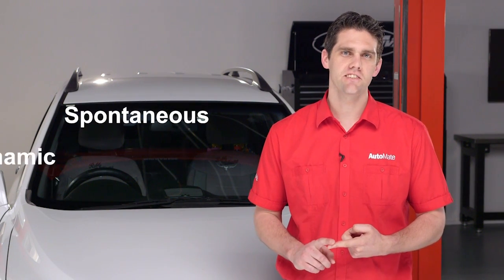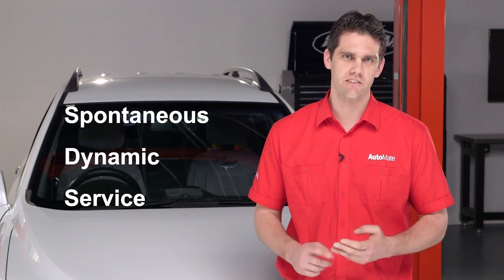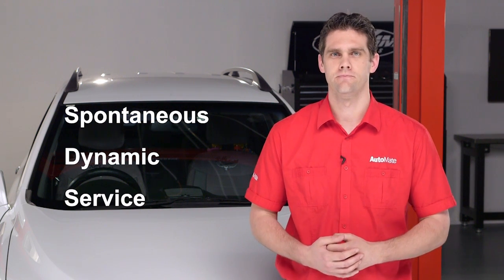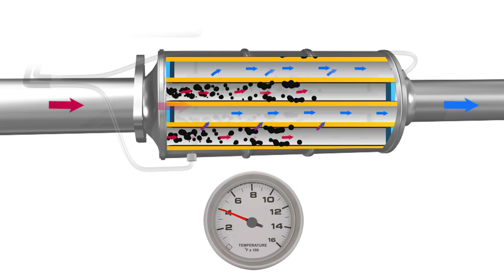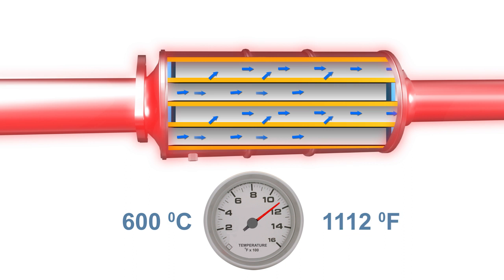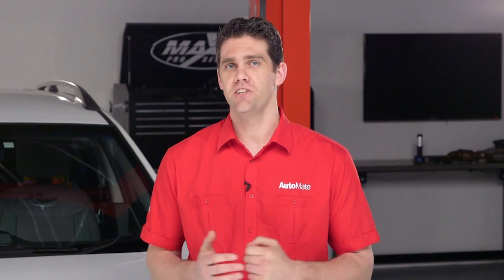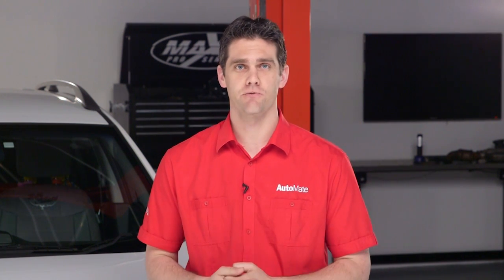The regeneration prevents the diesel particulate filter from blocking up. There are three types of regeneration: spontaneous, dynamic, and service. Spontaneous regeneration occurs when the DPF reaches 600 degrees Celsius or 1112 degrees Fahrenheit. If a spontaneous regeneration does not occur and the ECU calculates that the DPF has reached its storage capacity, a dynamic regeneration is initiated.